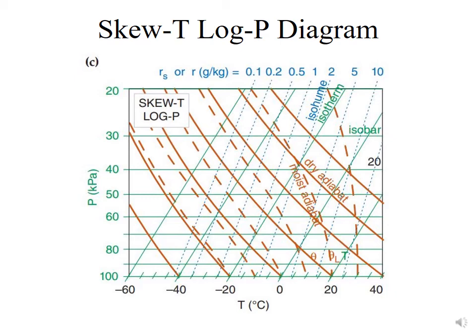The major use of Skew-T Log-P diagrams is for plotting radiosonde soundings, which give a vertical profile of the temperature and dew point throughout the troposphere and the lower stratosphere.